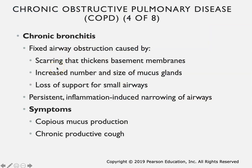In terms of chronic bronchitis specifically, because of the excess inflammation you can end up with scarring and thickening of the basement membranes of the respiratory airways - those epithelial cells become damaged and get replaced with other tissue, causing that scarring. There is an increased number and size of mucus glands, so more mucus glands are made and that increases mucus production. There is also loss of support for the small airways - the chronic inflammation leads to damage of respiratory structures, and if you lose the support of those small airways, they can't be held open and they sort of collapse, especially on exhalation.